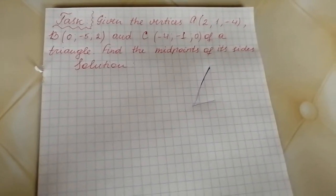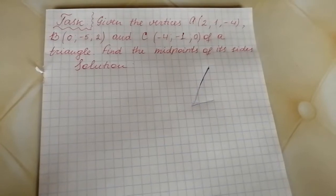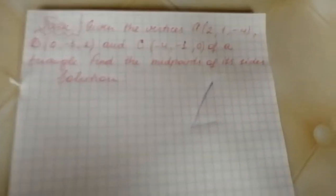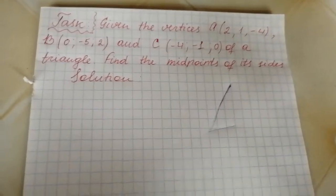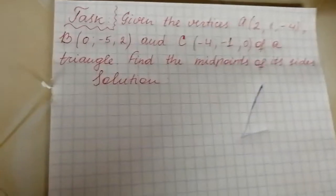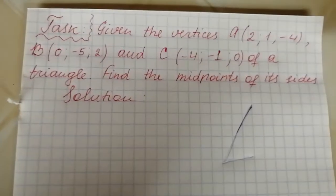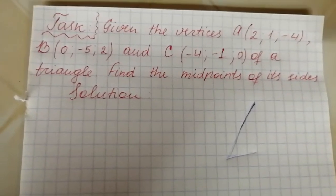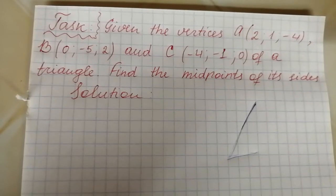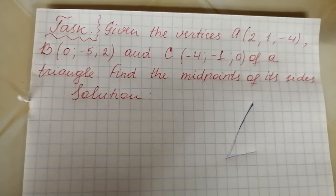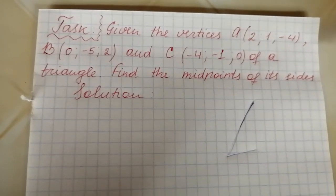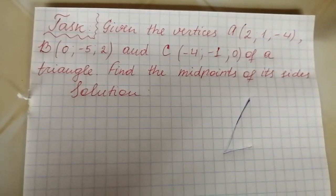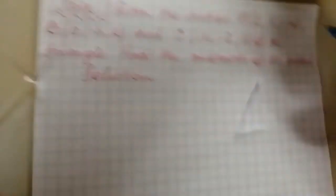This task is: given the vertices A, B and C of a triangle, find the midpoints of each side. Vertex A has the coordinates 2, 1 and negative 4. Vertex B has coordinates 0, negative 5 and 2. And vertex C has the coordinates negative 4, negative 1 and 0.